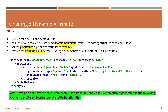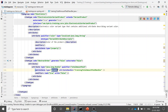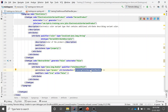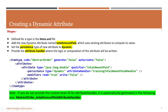Next, we provide the attribute handler class — the bean for which we'll write the handler. I've given the name 'trainingTotalAmountPaidHandler'. If you don't provide a handler name, it is automatically generated following the convention: item type underscore attribute name underscore 'AttributeHandler'. For best practice, it is advisable to give a readable attribute handler name.